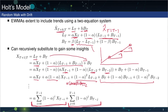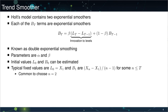As mentioned, Holt's model has two exponential smoothers. Each of the B_T terms themselves are exponential smoothers that depend on the innovation to the levels — that is, just the difference of the levels. This makes sense: if the levels are changing in a consistent way, that's an indication there's a trend. On the other hand, if the series is not trending, the levels should be fairly constant.